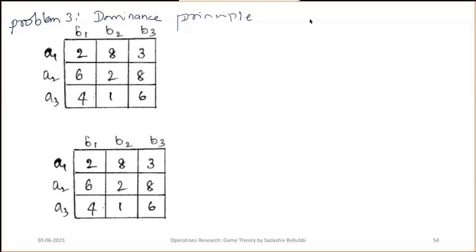Now we will solve a problem on the dominance principle. Player 1 and Player 2 are given, each having three strategies. Once you get the payoff matrix, you need to find the saddle point.